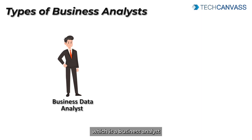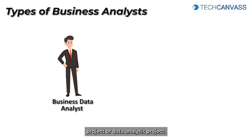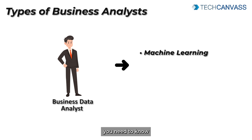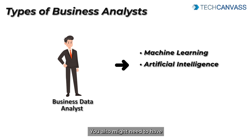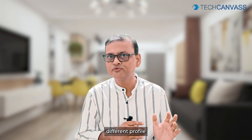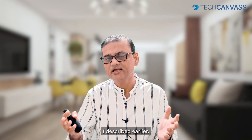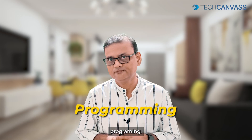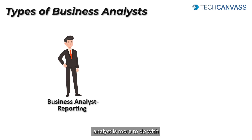The second type is a business analyst who works on data analytics or data analysis projects. Here you need skills related to data analytics — you need to know machine learning basics, artificial intelligence, and you may also need programming skills like R or Python. This is a completely different profile compared to the non-technical BA, and in this case some programming knowledge is required.